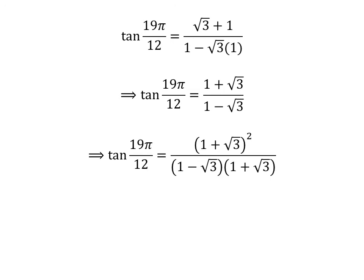So we get tangent of 19 times pi upon 12 is equal to the square of 1 plus square root of 3 upon 1 minus square root of 3 times 1 plus square root of 3.